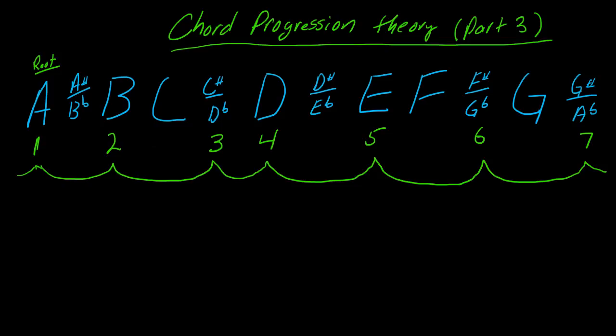In this third part of chord progression theory, I wanted to show you the five notes that are not represented in the number system. For example, in a key of A, we have numbers 1, 2, 3, 4, 5, 6, 7.